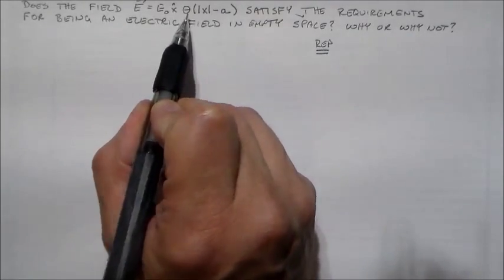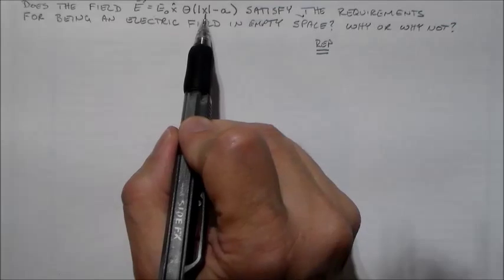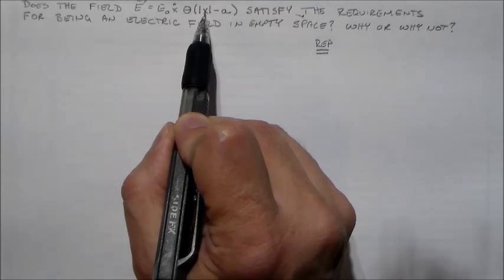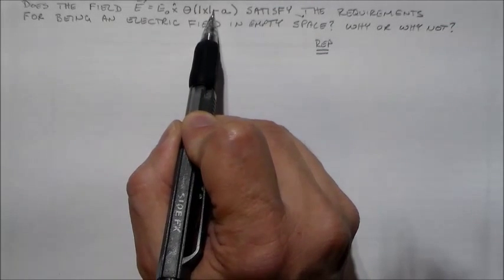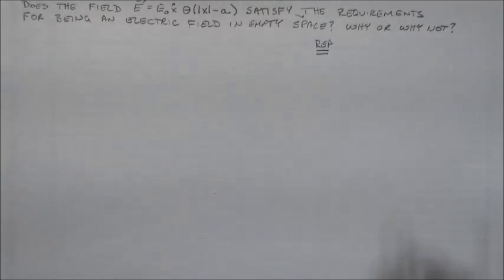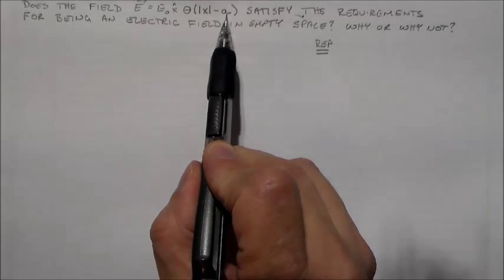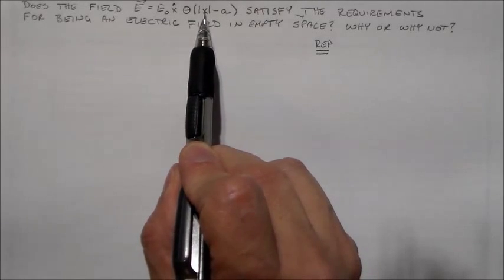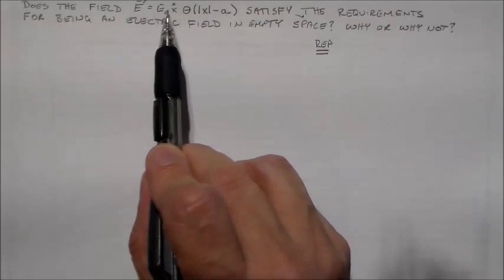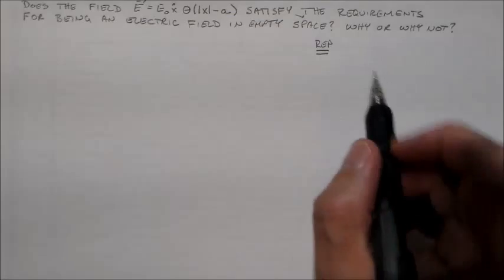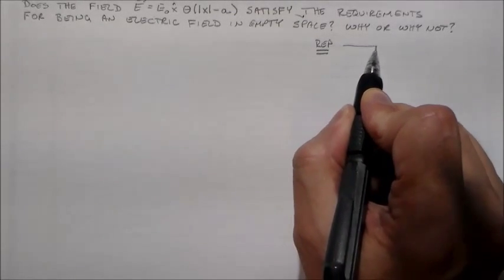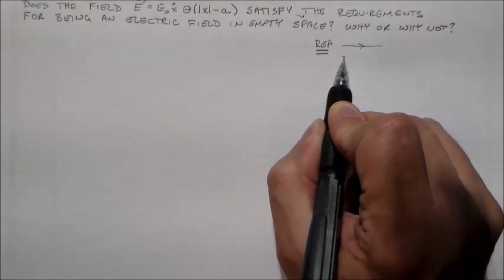It's a uniform field, and whenever the absolute value of x minus a is greater than zero, so when x is greater than a or x is less than minus a, then it has an electric field that's going in the positive x direction, sort of like this.